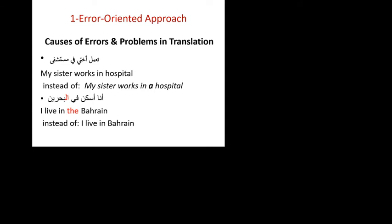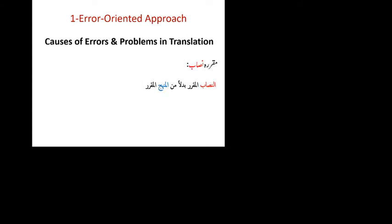The next example: 'I live in the Bahrain' — because in Arabic there is alif lam, which is the ta'rif for a proper noun. In English we don't use 'the' for proper nouns, so instead of 'I live in Bahrain,' one might say 'I live in the Bahrain.' This interference — the alif lam ta'rif of Arabic — interferes in the English translation in the shape of 'the.'